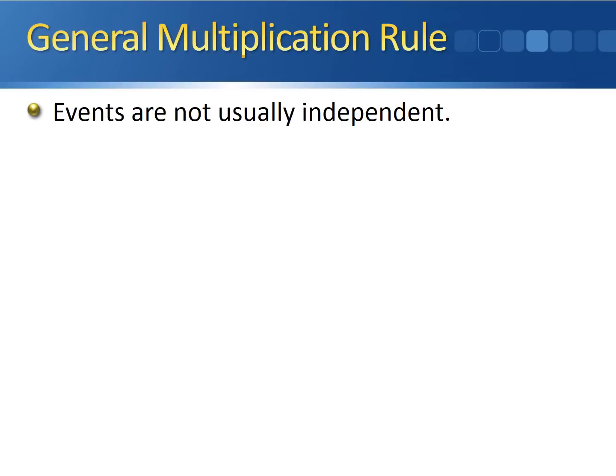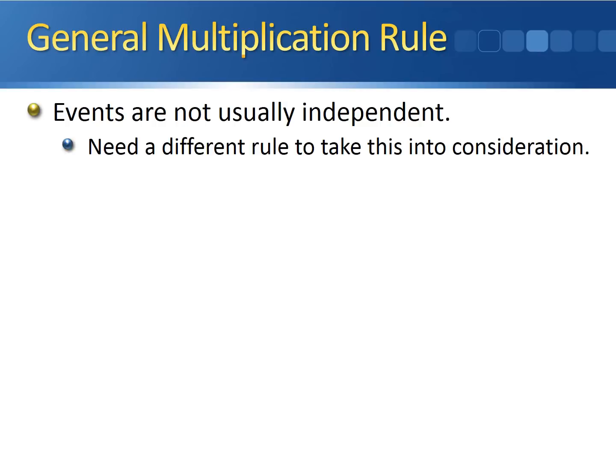It turns out that most events are not independent from one another. Generally, when you're looking at two separate events, there's some kind of a relationship between the two of them. We need a different rule to take this into consideration. The multiplication rule for independent events was nice, but it's not always going to hold.